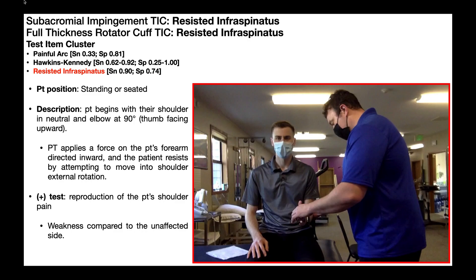We're now going to talk about the resisted infraspinatus test, also called the resisted external rotation test. In reality, this is just an external rotation manual muscle test for the shoulder, and it's part of two test item clusters — one for subacromial impingement syndrome and another for full thickness rotator cuff tear. The specificity isn't great at 0.74, but the sensitivity as a standalone test is 0.90 or 90%. Given this higher sensitivity, we can use this test as a screening tool to rule out one of these two shoulder pathologies. If the result is negative, there's a 90% chance that they do not have subacromial impingement syndrome or a full thickness rotator cuff tear.